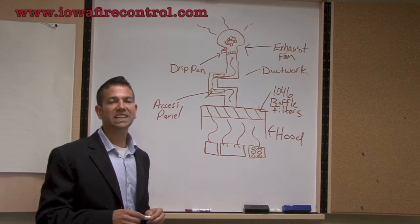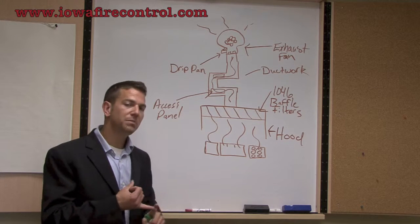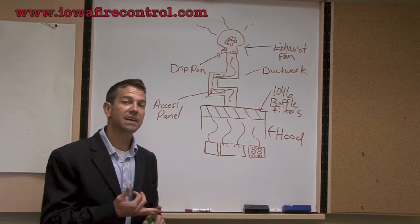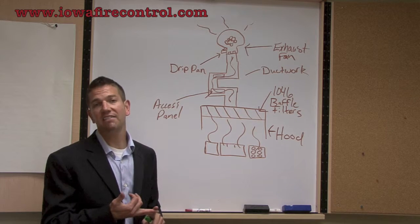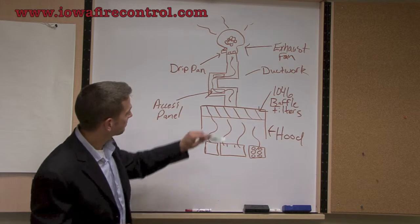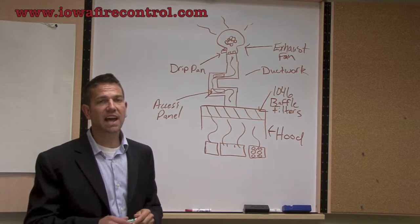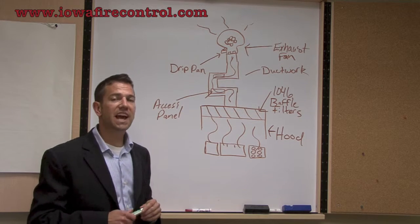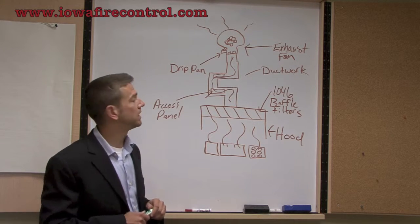When we go and clean a kitchen exhaust system, we need to be able to access it so we can inspect it, and also access it so that upon inspection, if it's found to be grease laden, we can have it cleaned. There will be strategically placed access panels within that system. If you're interested in access panels, check out our videos on our website.